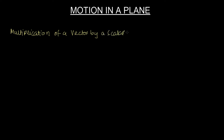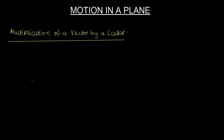Now we come to the multiplication of a vector by a scalar. Let us say I have a vector — let us say this is my vector, and this vector is 'a'.